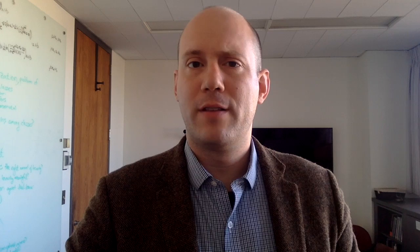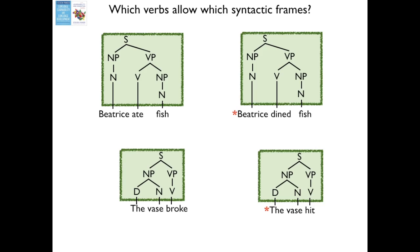Another problem that Pinker addressed is how the infant learns the syntactic rules that govern how a verb is used in a sentence — that you can say 'Beatrice ate fish' but not 'Beatrice dined fish,' and that you can say 'the vase broke' but not 'the vase hid.' Naively, you might think the child just notices which verbs get used in which frames and assumes that if she hasn't heard a given verb in a given frame, it just doesn't go. But with thousands of verbs and hundreds of syntactic frames, there's a good chance you wouldn't hear a completely legal verb-construction combination merely by chance. So how do you distinguish impossible combinations from merely unusual ones, avoiding both undergeneralization and overgeneralization?